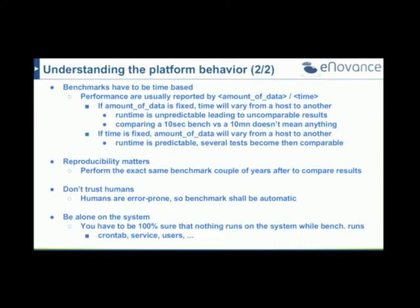Reproducibility is very important and it's linked to not trusting humans. If you want to test your platform the same way every time, humans cannot do it reliably — you will always miss one parameter or perform the test differently. So it has to be automated and done using an operating system that is also built by a bot. My system uses automation tools that generate the benchmarking operating system, so I can reuse the same OS in ten years to run the same benchmark on the same machine. This ensures all environment options are always the same and results are comparable over time.